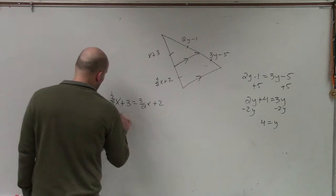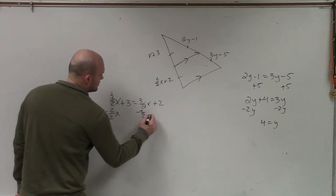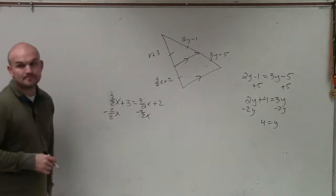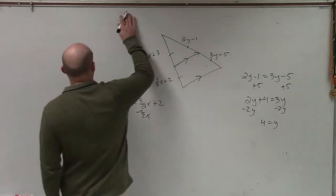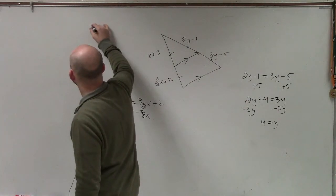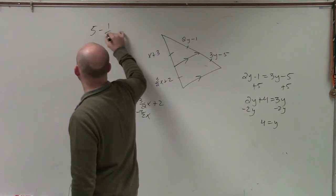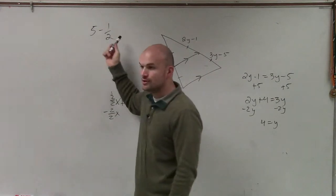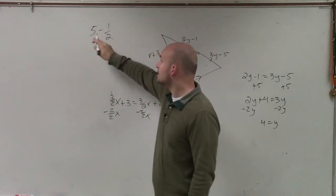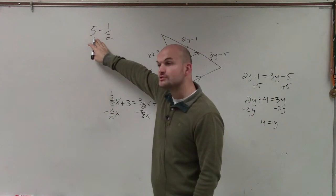So when I subtract 2 divided by 2x, well, if you're going to say 5 minus 1 half, can you subtract a whole number from a fraction? No, you've got to convert your whole number to a fraction, right?